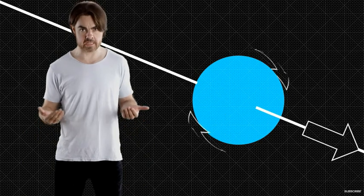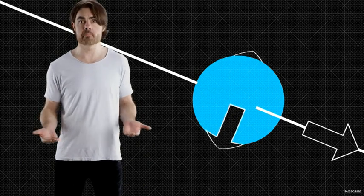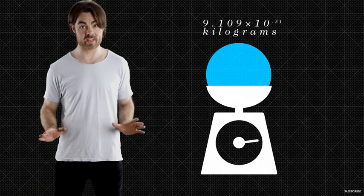That spin constantly flips back and forth. The electron evolves, meaning it does experience time, so it must have mass. Also, we've weighed it. We've measured that mass directly.